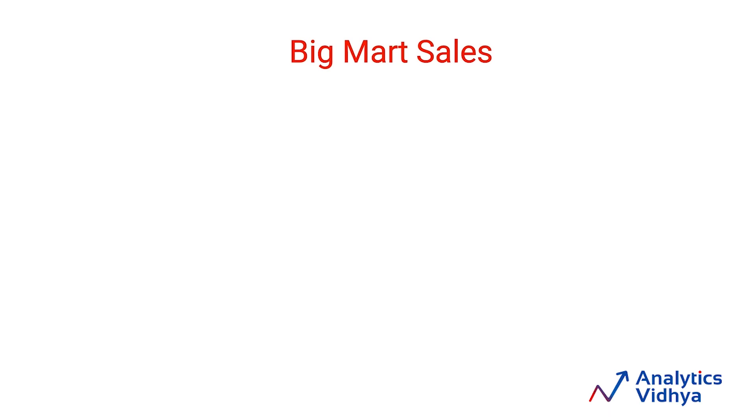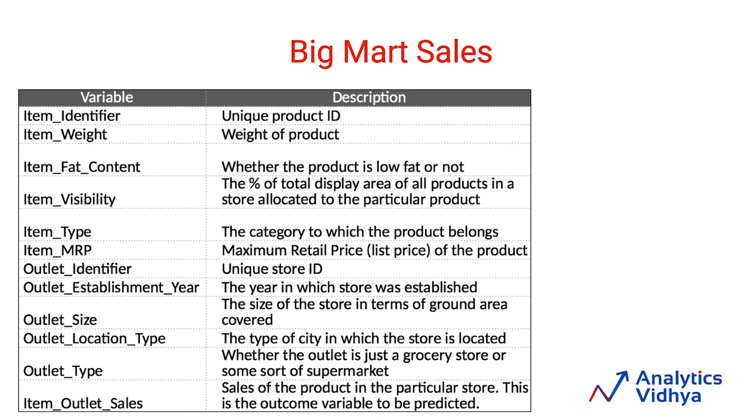The problem which we'll use for this is Big Mart Sales. What you need to do as part of this problem is build a predictive model to predict the sales of each product at a particular store. For example, I am selling butter at a particular store. We need to predict it at a store and product level. Here are the set of data which we have. There are several data points for the item and for the store.